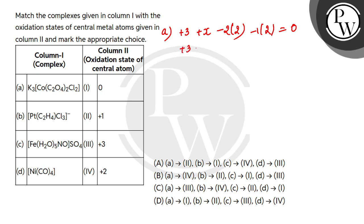So ho jayega plus three plus x minus four minus two is equals to zero. To x ki value kia jayega plus three. So a ka match ho jayega aapka third ke saath me.